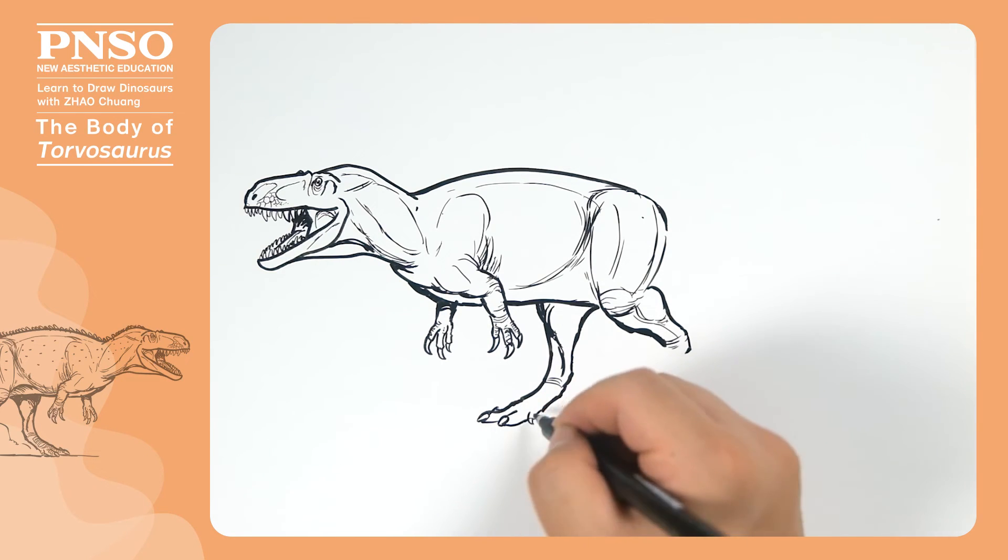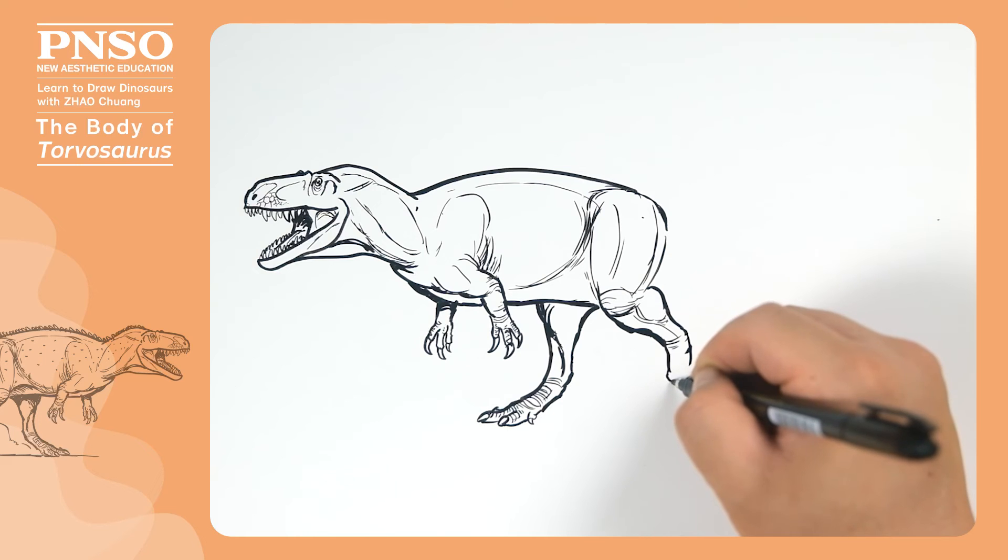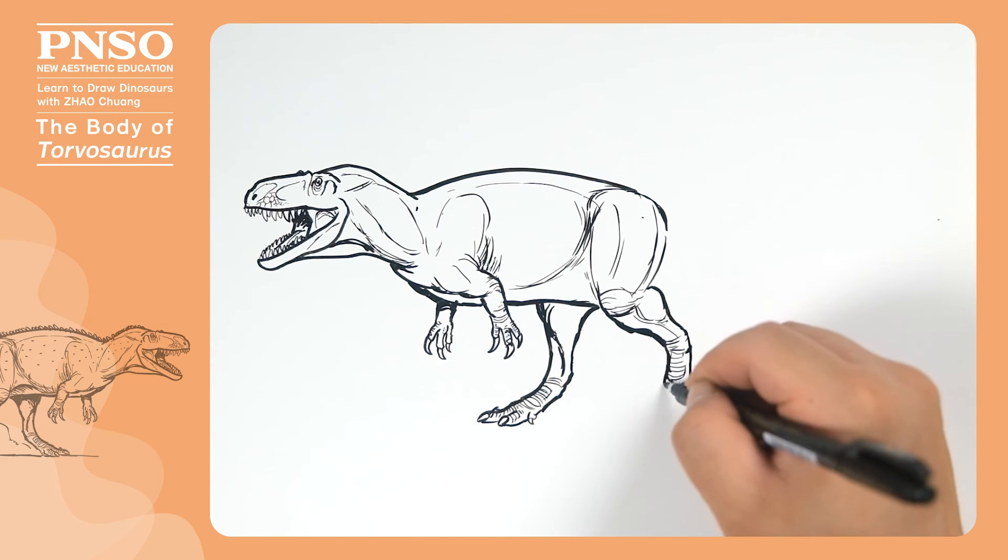It had four toes, with one off the ground. Some large scales can be drawn on the instep and the back of the toes. From this angle, we can only see three toes on the other foot, so drawing three toes will do. Large scales can be drawn on the back of the toes.